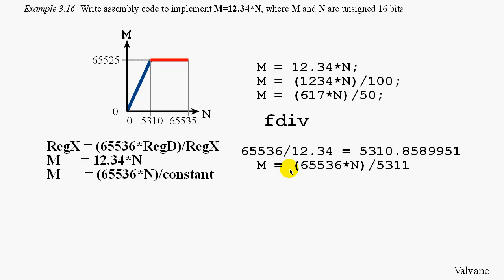In specific, we're going to use the FDIV instruction to implement this operation: 65536 times N then divided by 5311. And that will be approximately equal to M equals 12.34 times N.